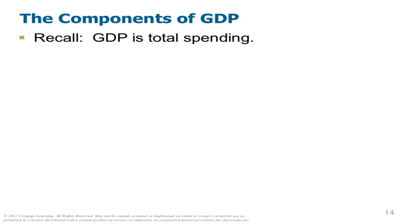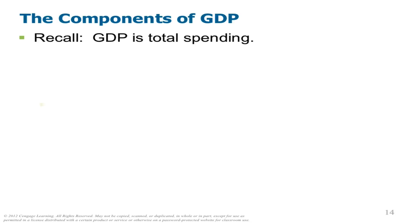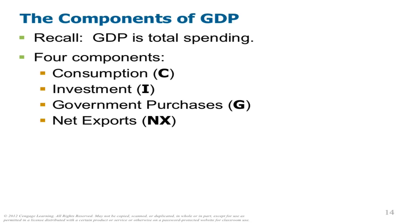GDP is total spending or total output. So there are four components: Consumption, which is C. Investment, which is I. Government spending, which is G. And net exports, which is NX.